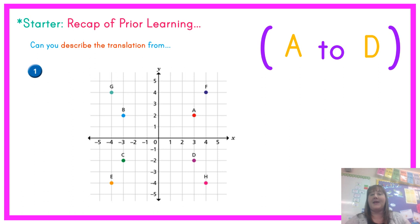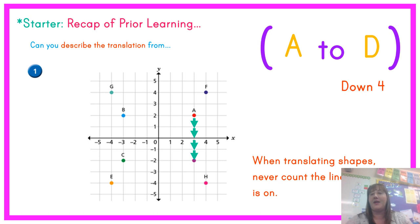We can now use our same 4 quadrant grid to move on to looking at translation. So the question is asking you to describe the translation from point A to point D. We can see that point A is in our first quadrant and point D is in our fourth quadrant. When translating shapes it's always important you never count the line the point is on. So if we're going from point A we can see that we are going down 1, 2, 3, 4. So to describe the translation it would be down 4.